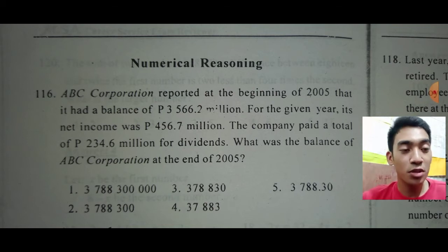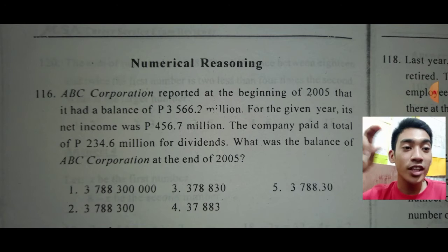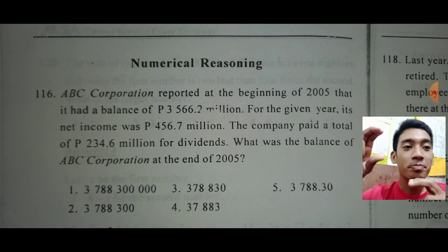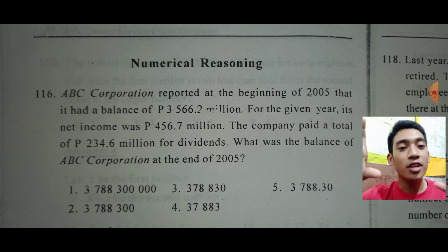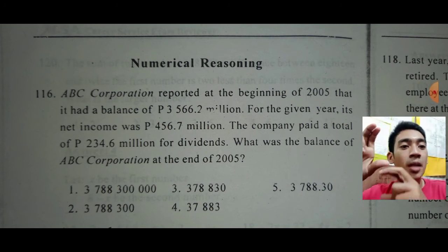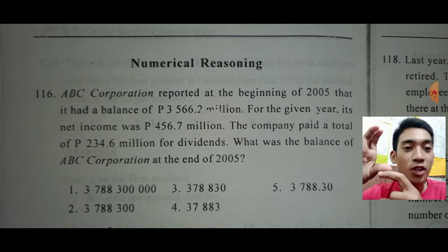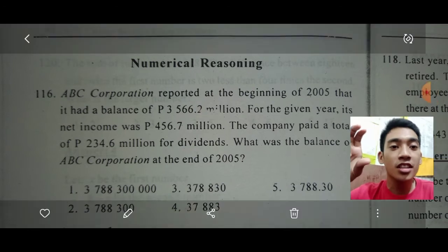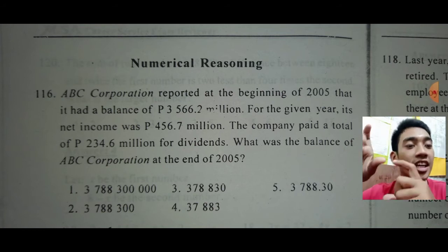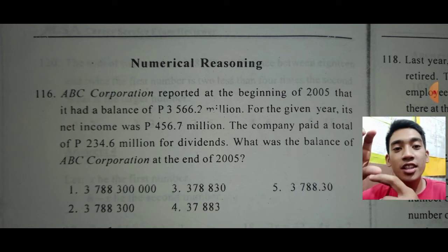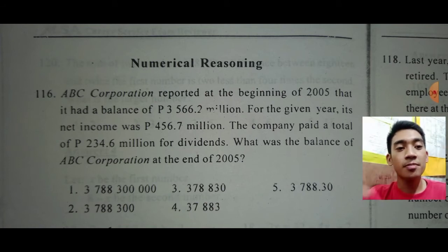ABC Corporation reported at the beginning of 2005 that it had a balance of 3,566.2 million. For 2005, its net income was 456.7 million. We add the net income because it is already net of liabilities and expenses. The company also paid a total of 234.6 million for dividends to stockholders. The question is: what was the balance of ABC Corporation at the end of 2005?